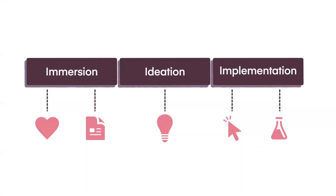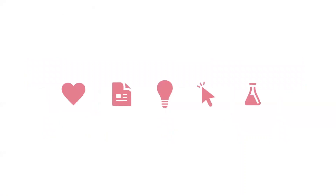The design thinking framework can be broken into three distinct phases: immersion, ideation, and implementation. Zooming in a bit further, these phases can be broken down into five actionable stages that make up the entire design thinking process — the icons of which you can see on your screen. Can you guys guess what each of these icons might mean? I'd be happy to hear some innovative — or even wrong — answers. What do you think these icons mean in design thinking?